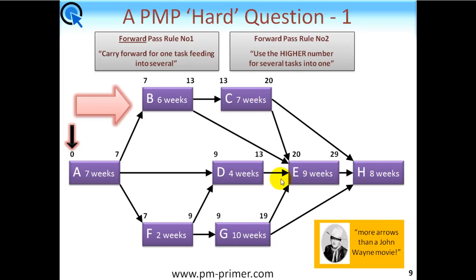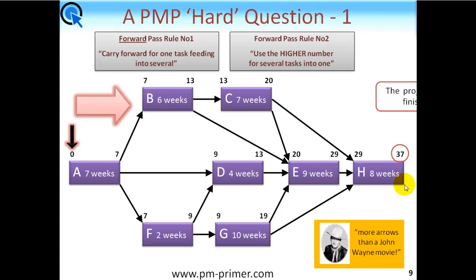Now we're coming to some multiple choices. Task E has four inputs — follow each arrow back and find the highest number. Out of the four, 20 is the highest, so 20 comes here. Plus nine gives you 29. Task H, the final one, is fed from three tasks — again, which is the highest? It's 29 which wins the day. So 29 goes here, plus eight gives you 37. And this, of course, is your project's earliest finish time. This is a so-called hard question — that wasn't very hard at all!